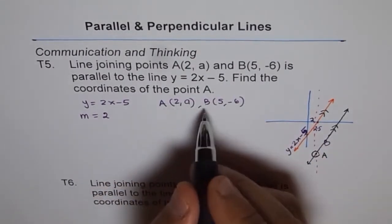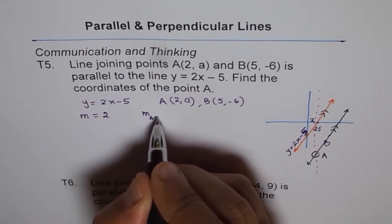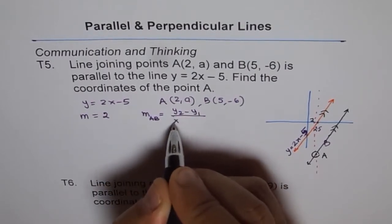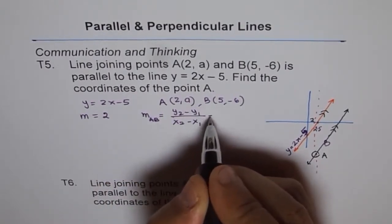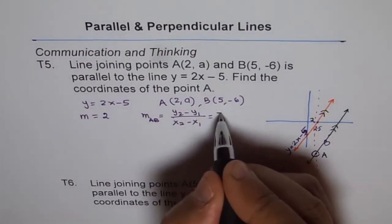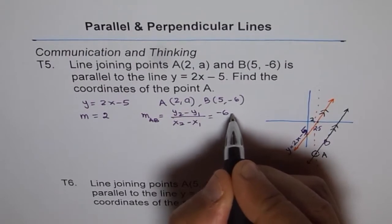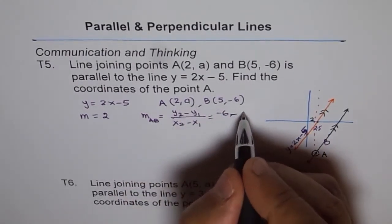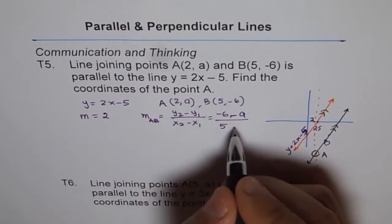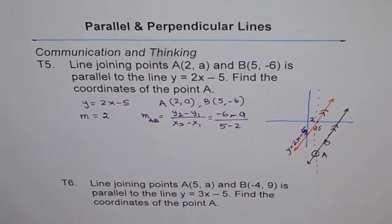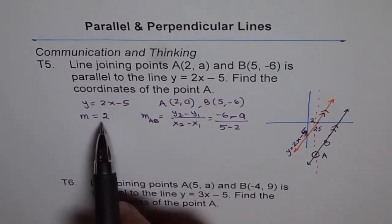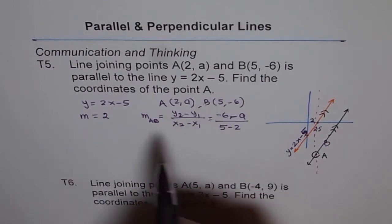Slope of AB = (y2 - y1) / (x2 - x1). So that is: (-6 - a) / (5 - 2). Since lines AB and the given line are parallel, this slope should equal 2.